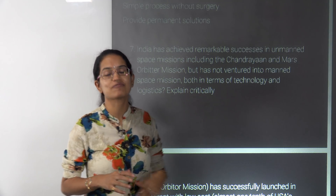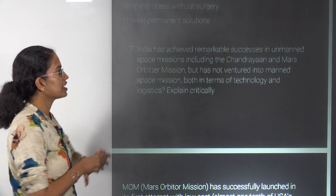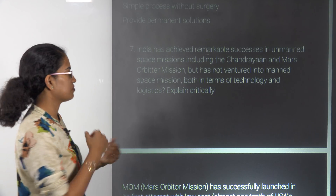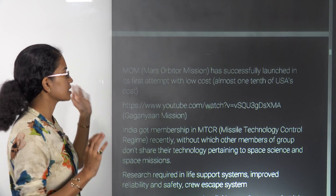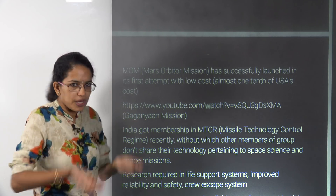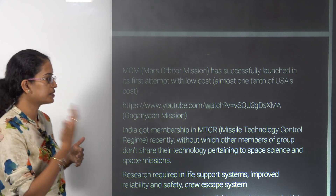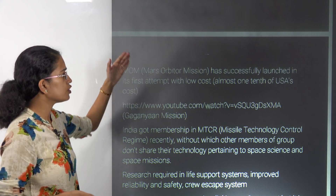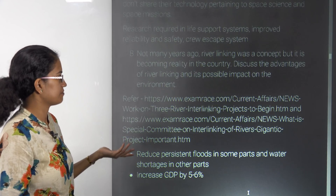The next question focuses on India's unmanned missions like Chandrayaan and Mangalyaan and why India had not yet ventured into manned space missions. However, as of now, India has already announced Gaganyaan as its manned mission. The Mars Orbital Mission was launched on the first attempt at very low cost — nearly one-tenth of what the US paid. Answering this question now requires mentioning Gaganyaan, India's membership in MTCR (Missile Technology Control Regime), and ongoing research on life support systems, crew cabin, crew escape systems, and safety measures.